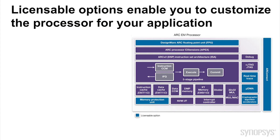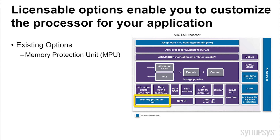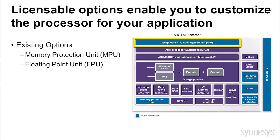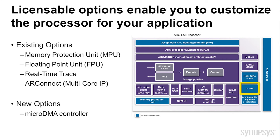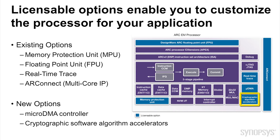A variety of licensable options enable users to further customize their Arc processors to meet their application needs. Some existing options are a memory protection unit, floating point unit, real-time trace, and ArcConnect to facilitate multi-core integration. These options are available for all EM processors. New options that are now also available include an integrated micro-DMA controller and hardware extensions to accelerate common cryptographic algorithms.